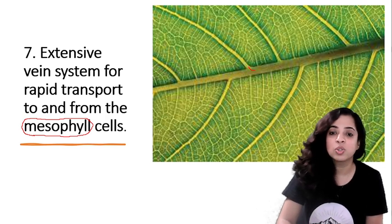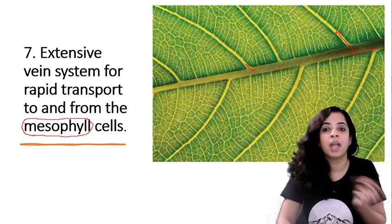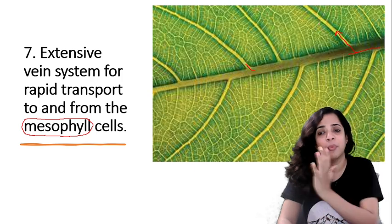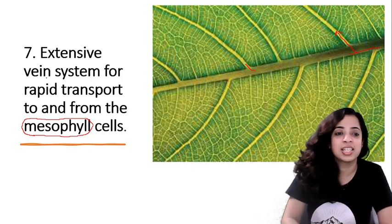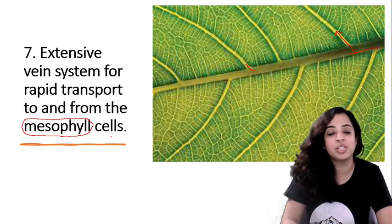Through the veins of the leaf only, the water comes in through the roots, and from here only the other things, the carbohydrates and all, pass. So extensive vein system helps in the rapid transport to and from the mesophyll cells.